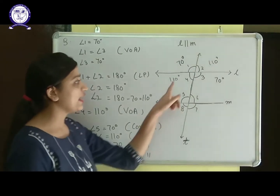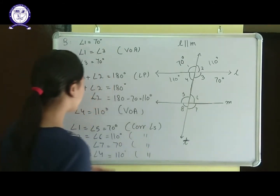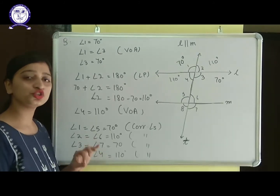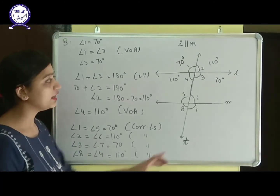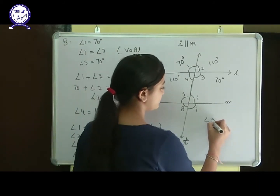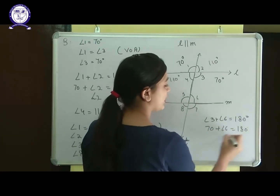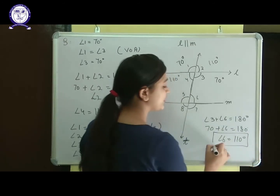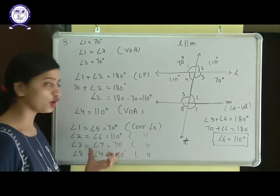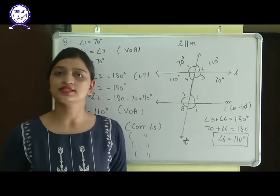You can also apply other properties. For example, angle 4 and angle 6 are alternate interior angles, so angle 6 is 110 degrees — the same result. Or using co-interior angles: angle 3 plus angle 6 equals 180, so 70 plus angle 6 equals 180, giving angle 6 equals 110 degrees. The value is the same regardless of which property you use — it's up to you which one you apply first.